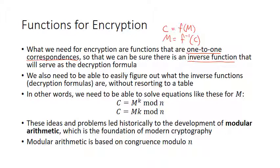We also need to be able to easily figure out what the inverse functions are without resorting to a table, because those are going to be our decryption formulas. This brings us to needing to solve equations like C equals M to the K or C equals M times K mod N. The need to solve those kinds of modular equations historically led to the development of modular arithmetic, which is really the foundation of modern cryptography.